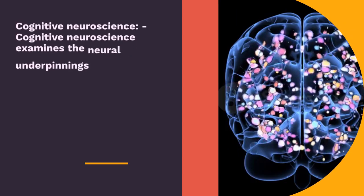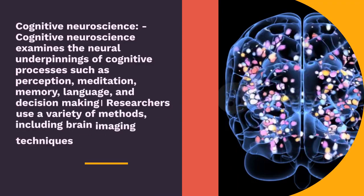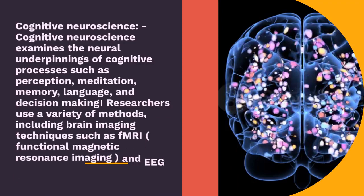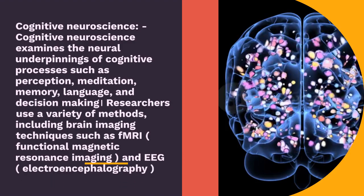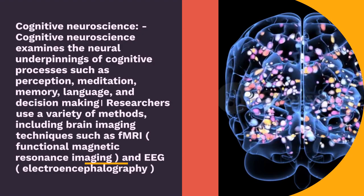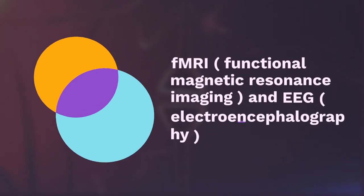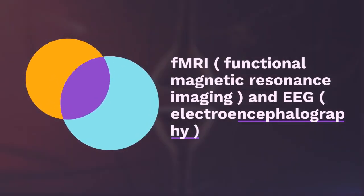Cognitive Neuroscience examines the neural underpinnings of cognitive processes such as perception, attention, memory, language, and decision making. Researchers use a variety of methods, including brain imaging techniques such as fMRI (functional magnetic resonance imaging) and EEG (electroencephalography).